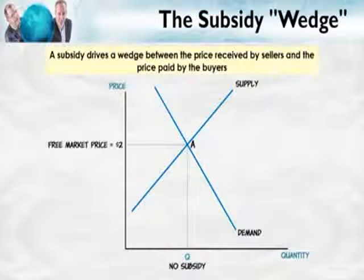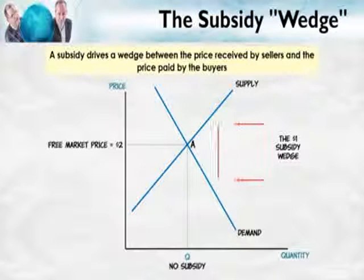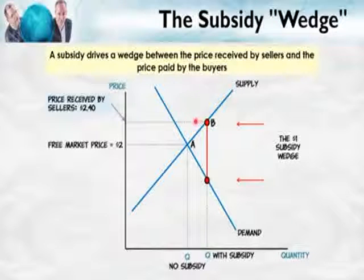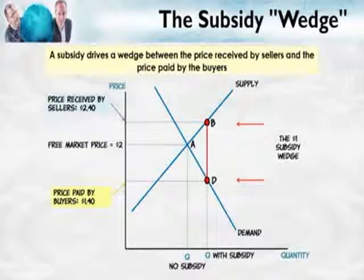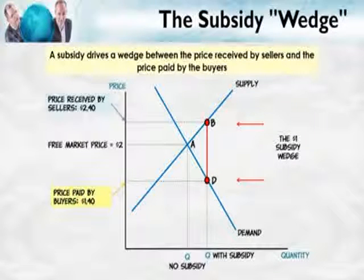We can use the same wedge analysis as before, except we're going to drive the wedge into the diagram from the right-hand side. Consider the height of this wedge — let's suppose that's a dollar. We drive it in until the top hits the supply curve and the bottom hits the demand curve. At point B, the top tells us the price received by sellers: $2.40. At point D, the bottom tells us the price paid by buyers: $1.40. The price received by sellers is $1 more than the price paid by buyers — the $1 coming from the subsidy.